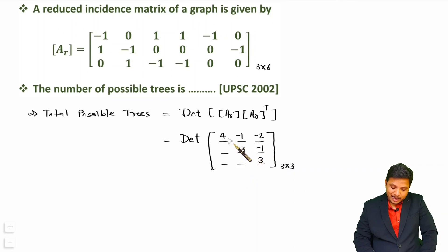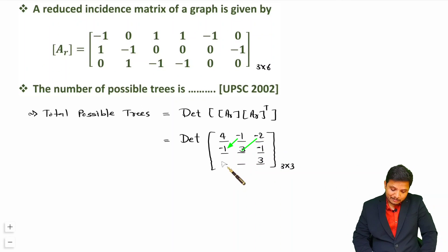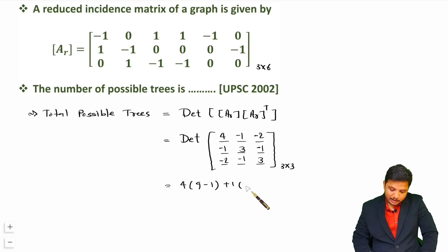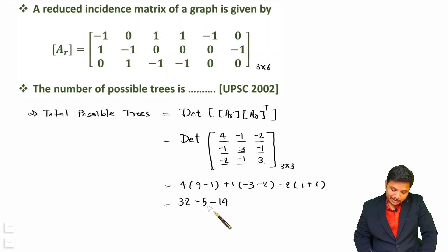Since Ar times Ar transpose is always symmetric, the matrix is complete. Now computing the determinant: 4 times (3 times 3 minus (minus 1)(minus 1)) minus (minus 1) times ((minus 1)(3) minus (minus 1)(minus 2)) plus (minus 2) times ((minus 1)(minus 1) minus 3 times (minus 2)). Working through this gives 4 times 8 minus 5 minus 14, which equals 32 minus 5 minus 14 equals 13. So there are 13 possible trees.